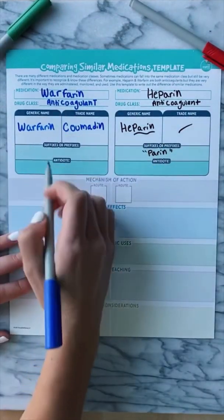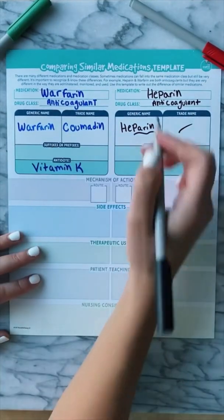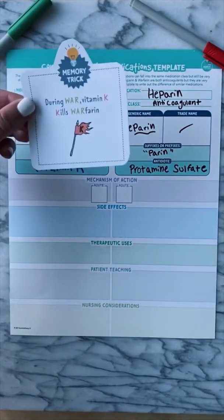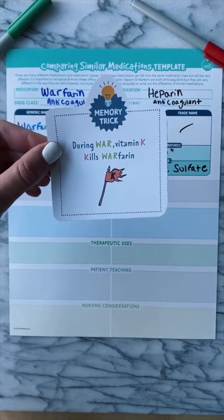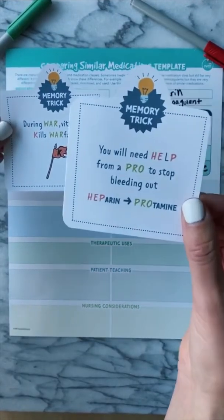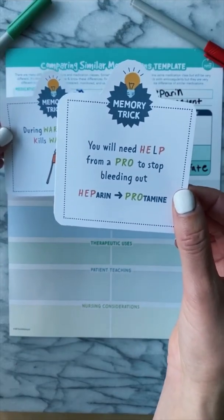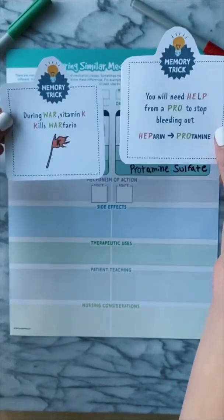The antidote for warfarin is vitamin K, and the antidote for heparin is protamine sulfate. A memory trick to remember this: during war, vitamin K kills warfarin. And for heparin, you will need help from a pro to stop bleeding out — heparin, protamine sulfate.